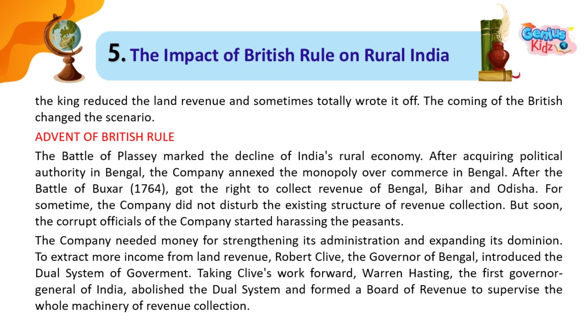Taking Clive's work forward, Warren Hastings, the first Governor-General of India, abolished the dual system and formed a board of revenue to supervise the whole machinery of revenue collection.